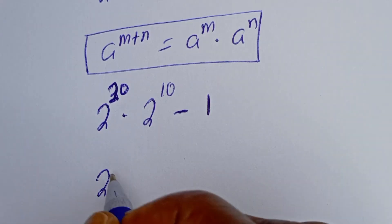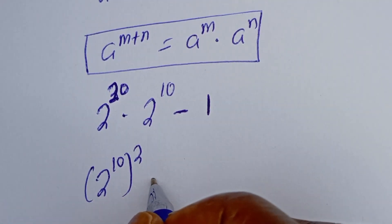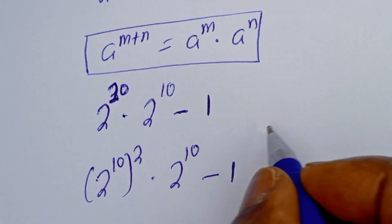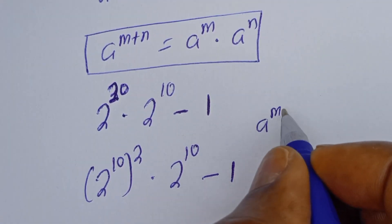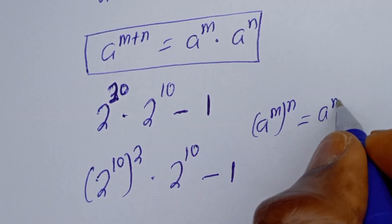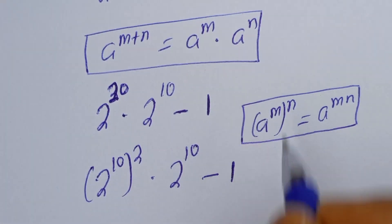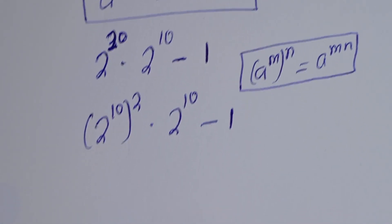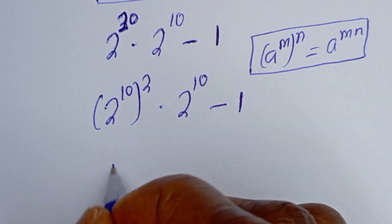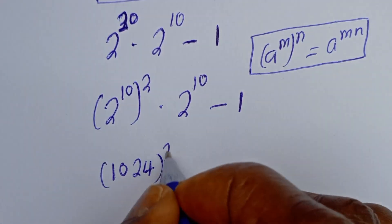Then 2 to the power of 20 can be written as 2 to the power of 10, all squared, multiplied by 2 to the power of 10, minus 1. Here, if you have a raised to power m, to the power of n, this equals a raised to power m times n. Now, 2 to the power of 10 is 1024, squared.